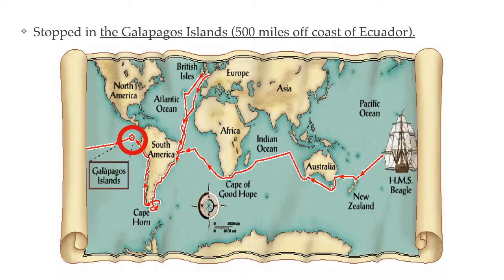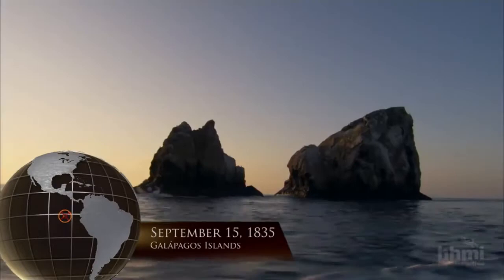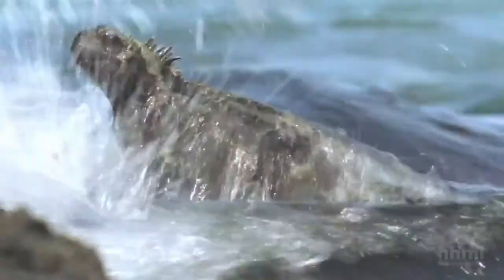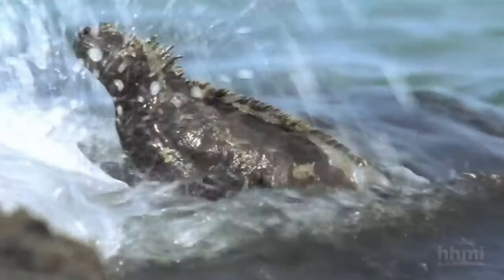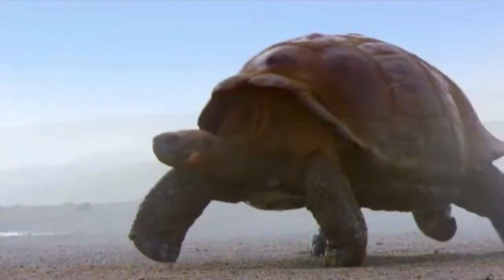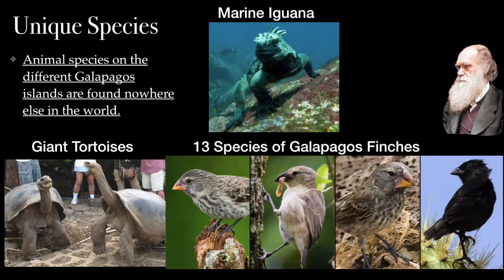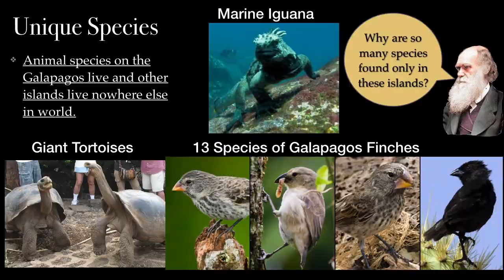The most famous examples came from the Galapagos Islands, home to many unique species — like marine iguanas, which can live on both land and in the sea; giant tortoises of various species inhabiting different islands; and a variety of birds, among them the now famous Galapagos finches. The different species seemed to vary according to the islands in which they lived, which was one of a number of clues that would lead Darwin to develop the theory of evolution by natural selection.